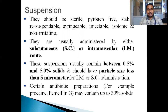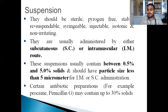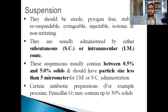Parenteral suspensions usually contain between 0.5% and 5% w/v solids, and have a particle size less than 5 micrometers for intramuscular or subcutaneous administration. A main example is procaine penicillin G, which may contain up to 30% solids.